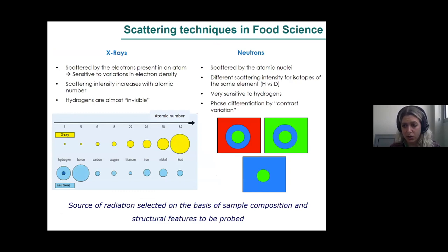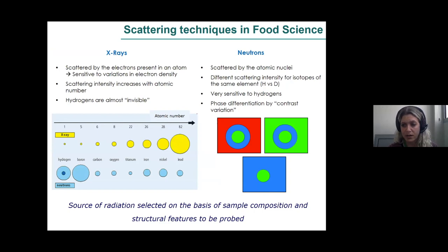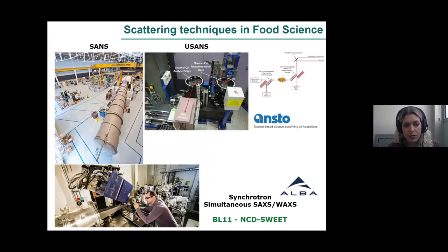In my presentation we used both X-rays and neutrons. In the case of polysaccharides, X-rays highlight differences between crystalline and amorphous domains, whereas neutrons allow us to generate contrast between different components in our samples. We need to carefully select the source of radiation for each type of experiment. We performed experiments in Australia using the SANS and USANS instruments, and have also done a lot of work on the SAXS and WAXS beamline at the Spanish Synchrotron.